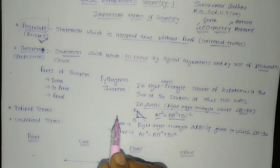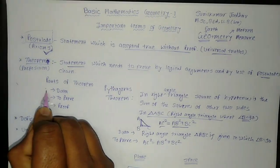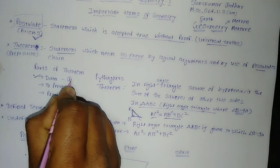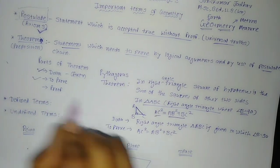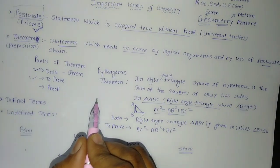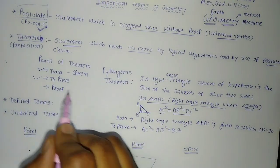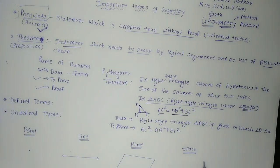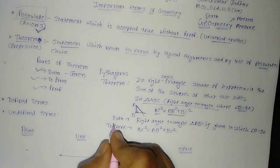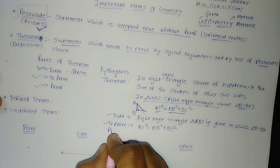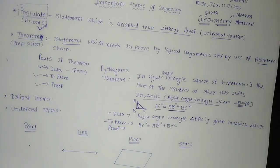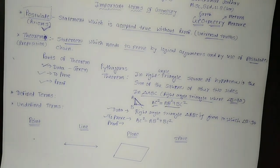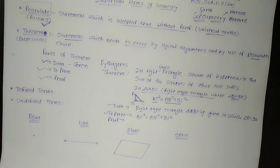So a theorem has three parts: data means whatever is given, 'to prove' means whatever we want to establish as proof, and the proof stage is where we prove it using logical argument, with the help of a figure. These are the things related to theorem.